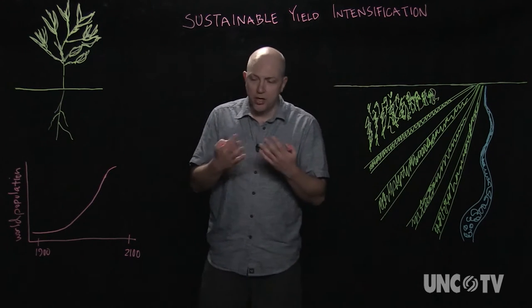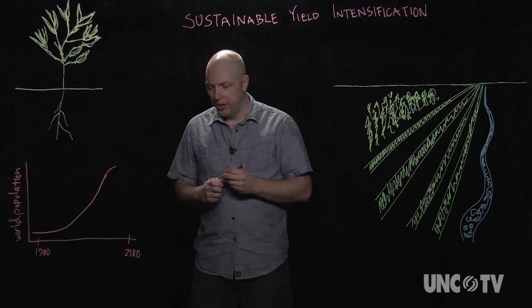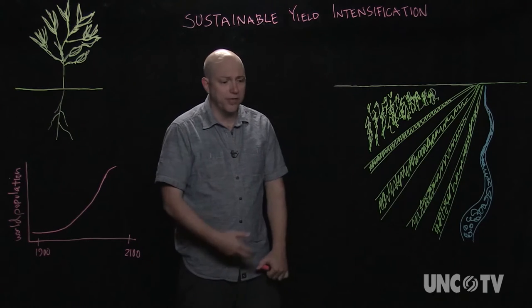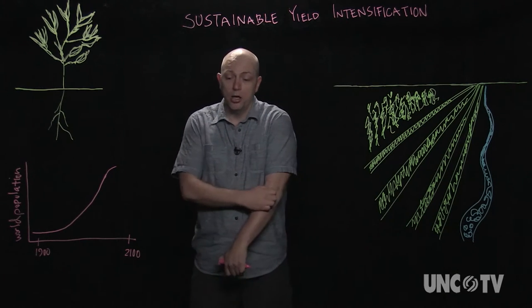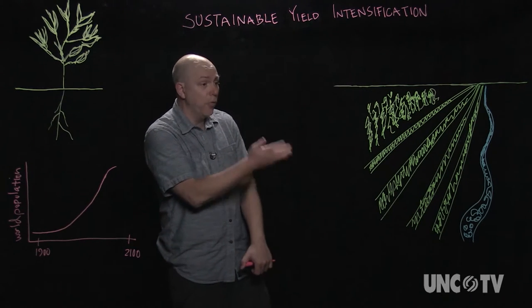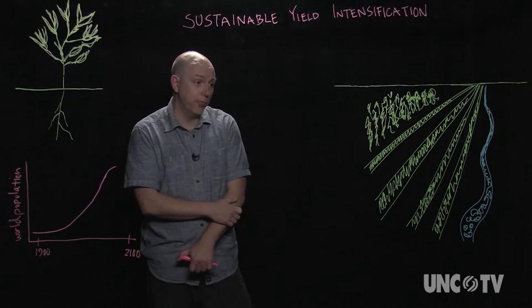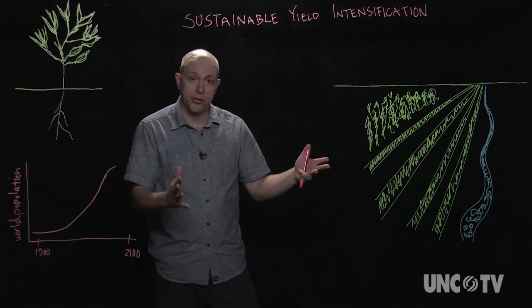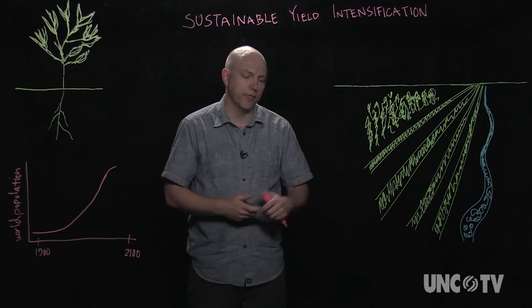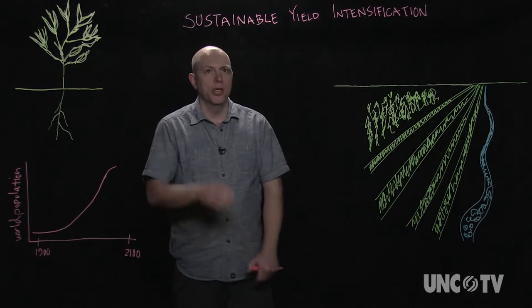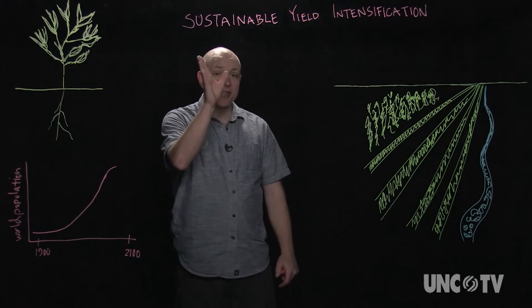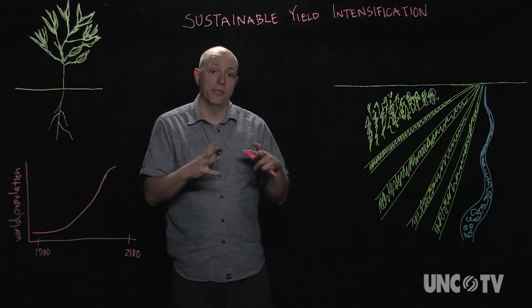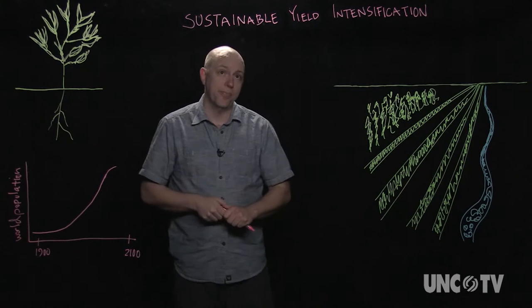But demographers and other agricultural scientists around the world think that we're going to need to boost food production something like 70% by 2050, maybe double it by 2100, and on agriculture's existing footprint. We don't really want to expand agriculture into the natural areas of the world that are so important for conserving biodiversity. So that's an important part of the sustainability of sustainable yield intensification, reducing the amount of land that's needed to feed everybody.